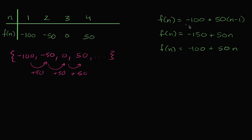Let's think about this definition: f(n) = -100 + 50(n-1). We're starting at negative 100 and adding 50 n minus one times. For the first term, we add 50 zero times — one minus one is zero — that checks out. For n equals two, we add 50 once; two minus one is one — correct. For n equals four, we add 50 three times: negative 100 plus 50 times three gives us 50. This one checks out.